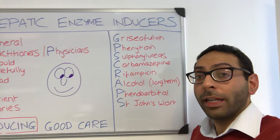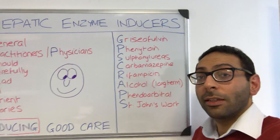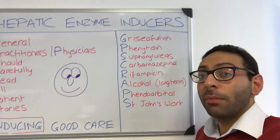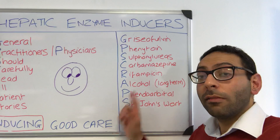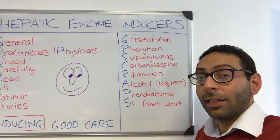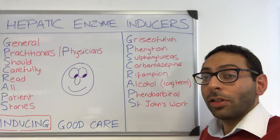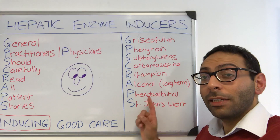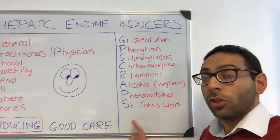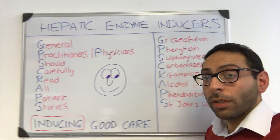S is sulfonylurea, C is carbamazepine, R is rifampicin, A is alcohol (long use), P is phenobarbital, and S is St. John's wort.